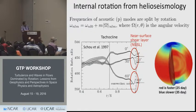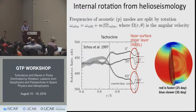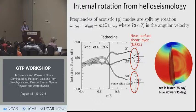Looking closer to the surface, there is also a very strong dependence of rotation with radius. At least for 0 and 30 degrees, the angular velocity goes up as we go inside the sun. At 60 degrees, it seems like the sign of the radial shear has switched.